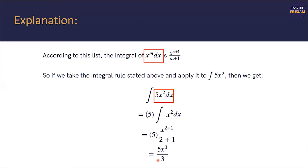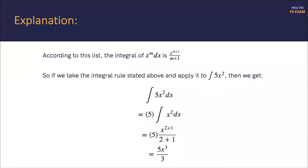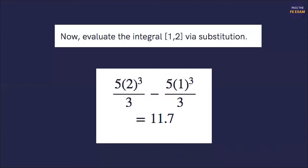Once you've done that and gotten to that point, you want to evaluate the integral from 1 to 2 via substitution. You're thinking, what does this mean and how did you get these two numbers? Well, it's really pretty simple — just go back to the problem. Those numbers 1 and 2 come from the original expression. So we evaluate 5x cubed over 3 by substituting: it's 5 times 2 cubed over 3, minus 5 times 1 cubed over 3. And you come up with 11.7. That's your answer.